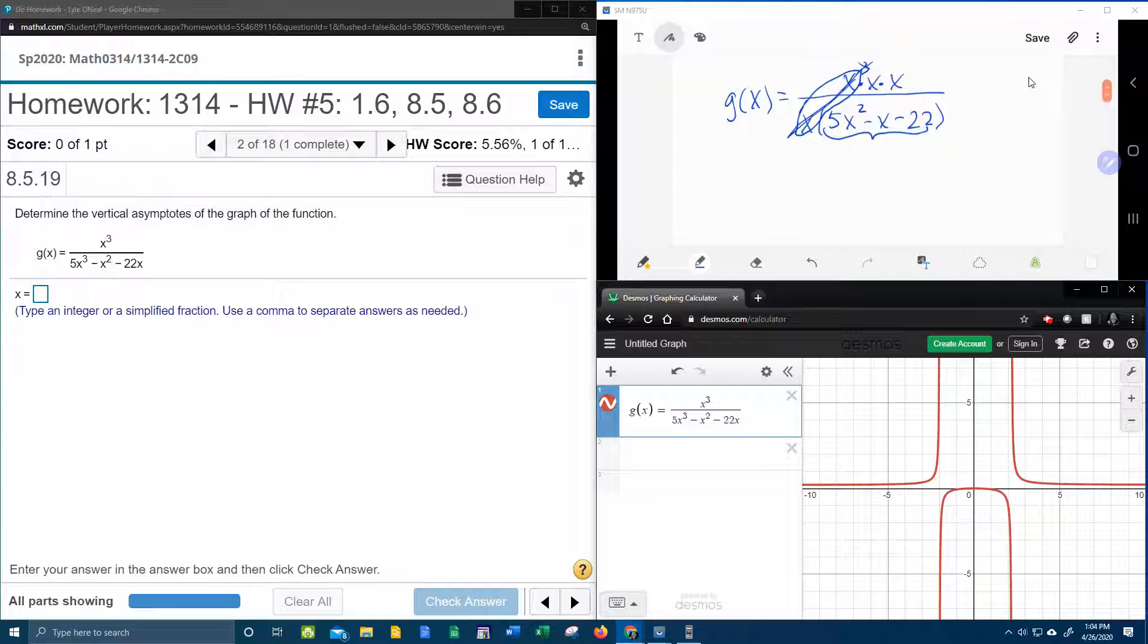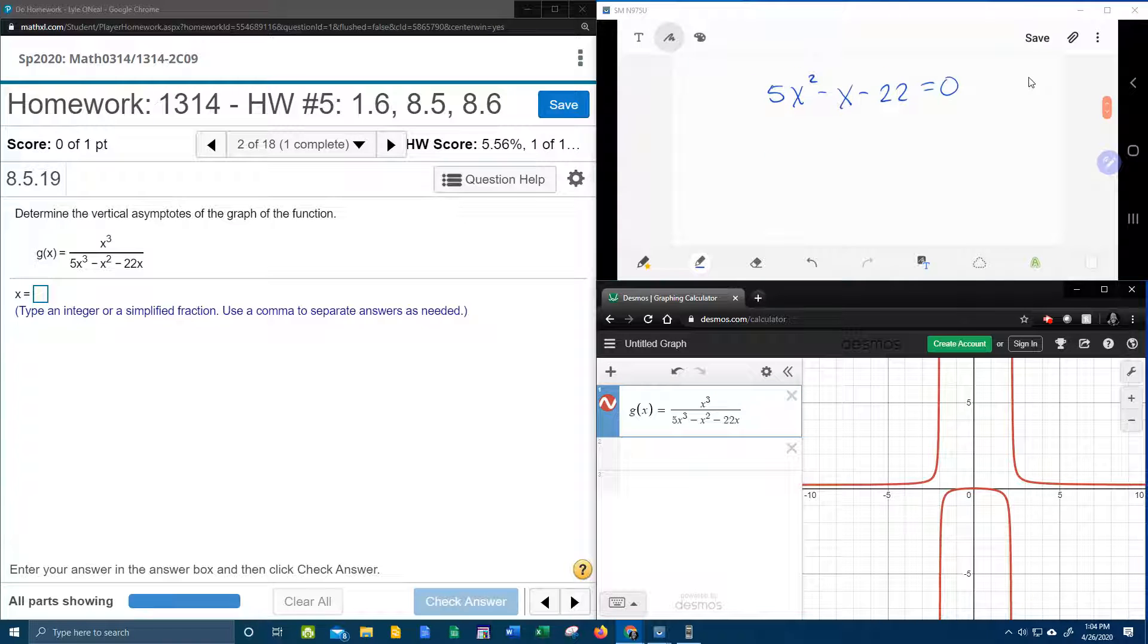If you're looking for the asymptotes, you need to set that equal to zero and solve. So we've got 5x squared minus x minus 22 equal to zero, and we need to solve that for x.